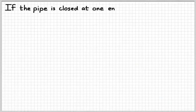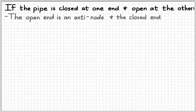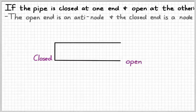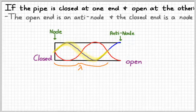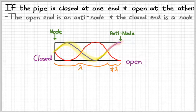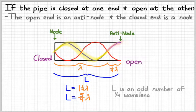If the pipe is open at one end and closed at the other, the physics is a little different. The open end must be an anti-node, and the closed end must be a node. For the fundamental, the length of the pipe equals one-fourth lambda; the next allowed wave gives L equals five-fourths lambda. In general, L equals n over 4 times lambda, where n must be some odd number, so only odd harmonics are possible in a pipe closed at one end.